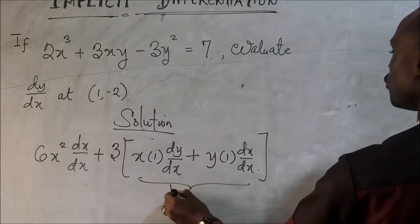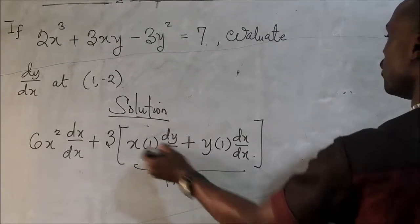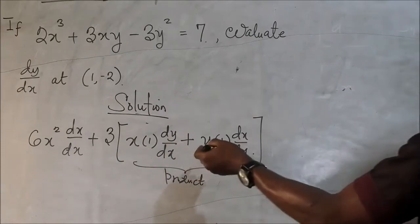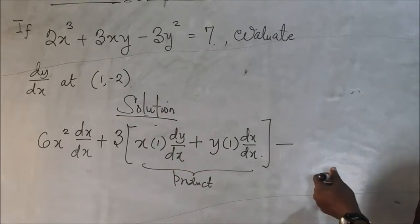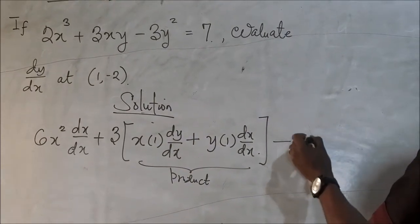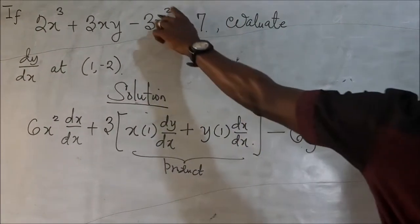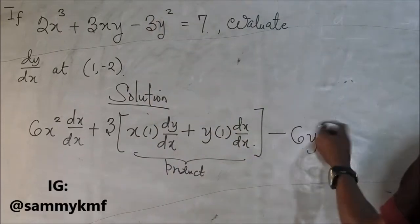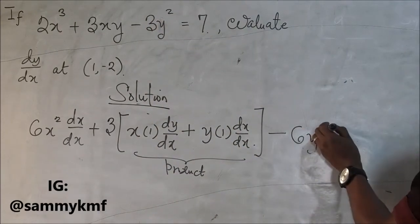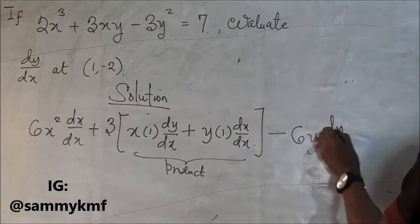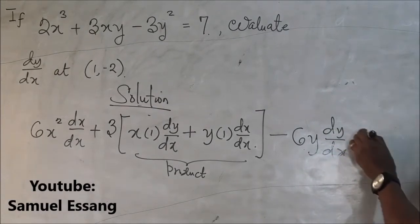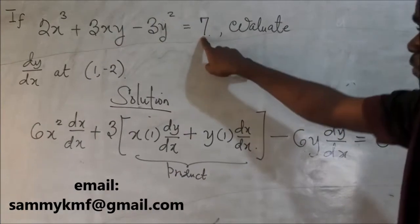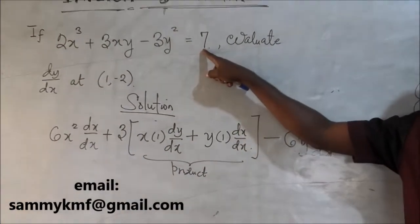Where we keep one variable, differentiate the other. We keep this other variable and differentiate the other. Now this will be minus. Differentiating this will be minus 6y. That's 2 times 3 and 2 minus 1 and we have that. Then we have dy dx because we differentiated the function of y. This will be equal to zero because the derivative of the constant is actually equals to zero.